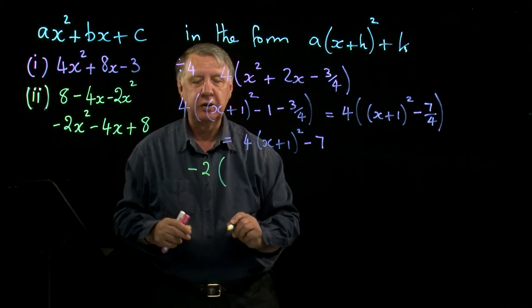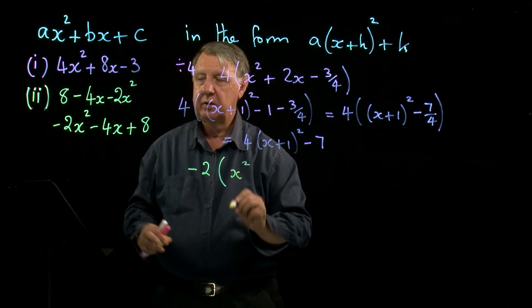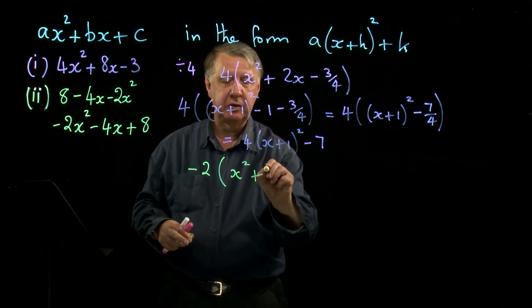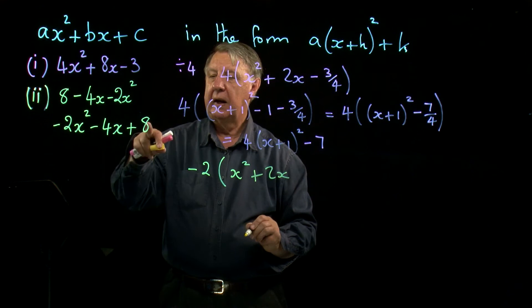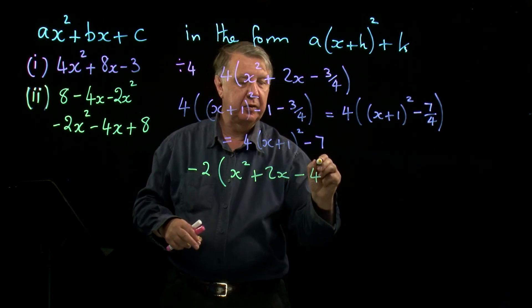I'll put the negative two outside so I get x squared. Negative four divided by negative two is plus 2x. Eight divided by negative two is negative four.